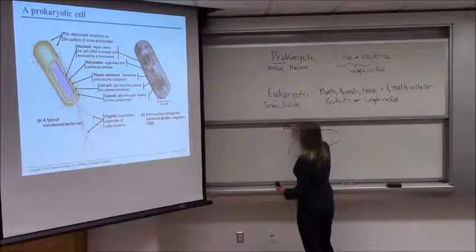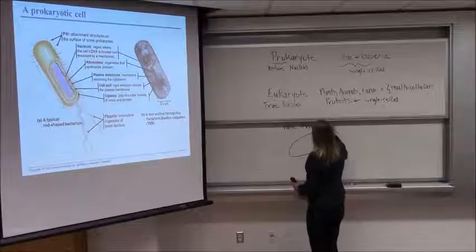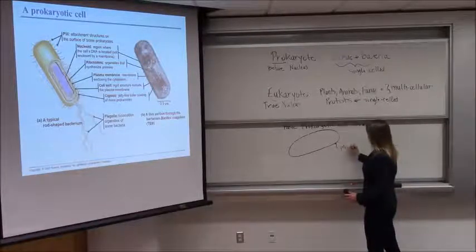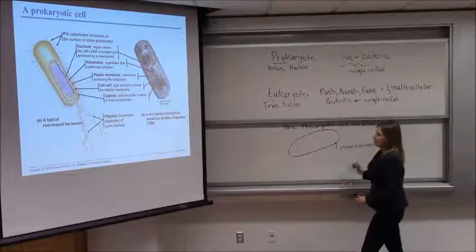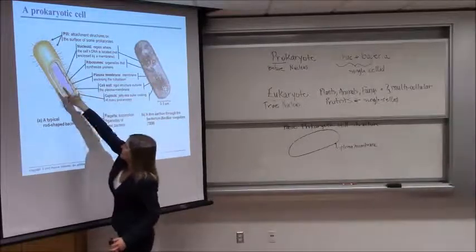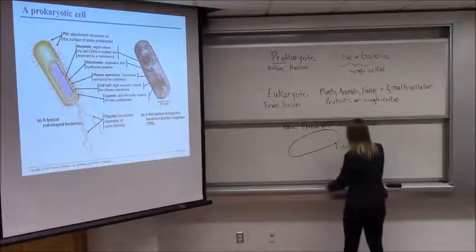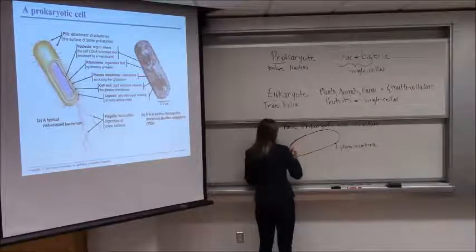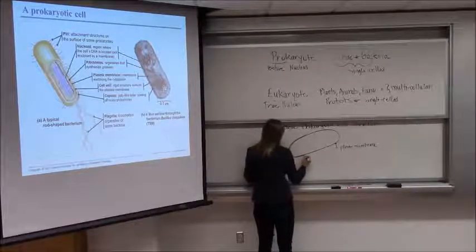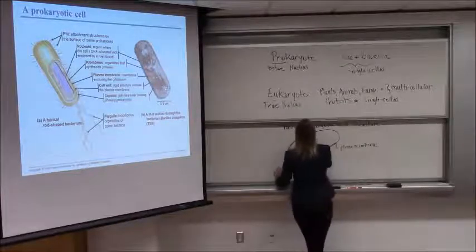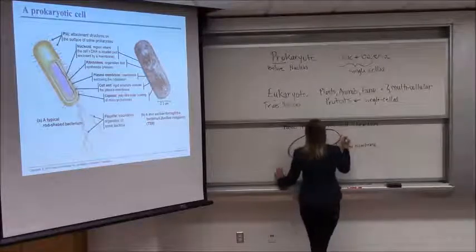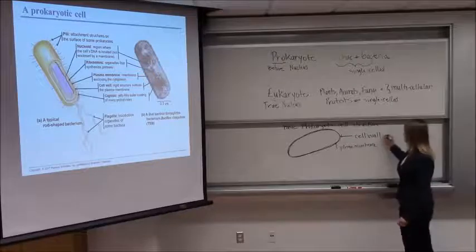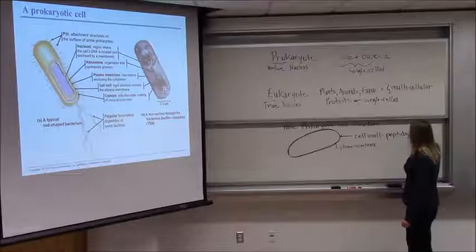This is a basic prokaryotic cell structure. There's going to be a plasma membrane surrounding the cell, and then outside that plasma membrane is a cell wall. Plants have a cell wall too, but the plant cell wall is made of cellulose — we already talked about cellulose as a structural polysaccharide in the carbohydrate unit; it's just a chain of glucose. This bacterial cell wall, though, is not made of cellulose — it's made of something called peptidoglycan.